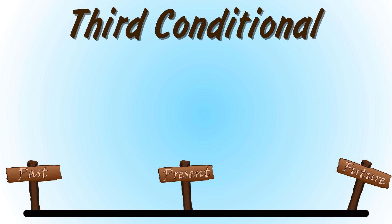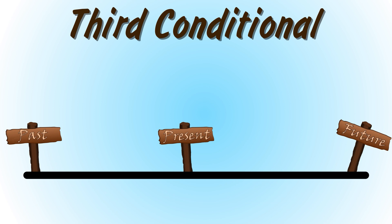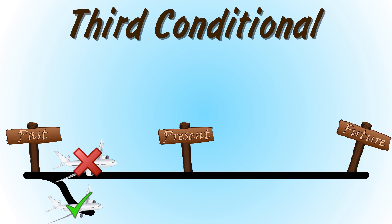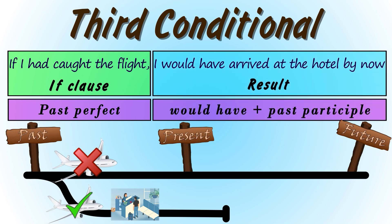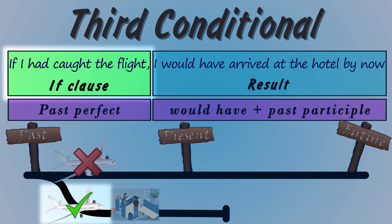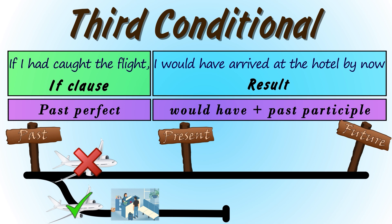Let's look at the third conditional. The third conditional is used to talk about an unreal or hypothetical situation in the past and the result if it had happened. For example, imagine you missed your flight. You could say: if I had caught the flight, I would have arrived at the hotel by now. The if clause is in the past perfect and the result clause uses would have with the past participle. It's all about reflecting on events that didn't happen and their potential outcomes if they had.